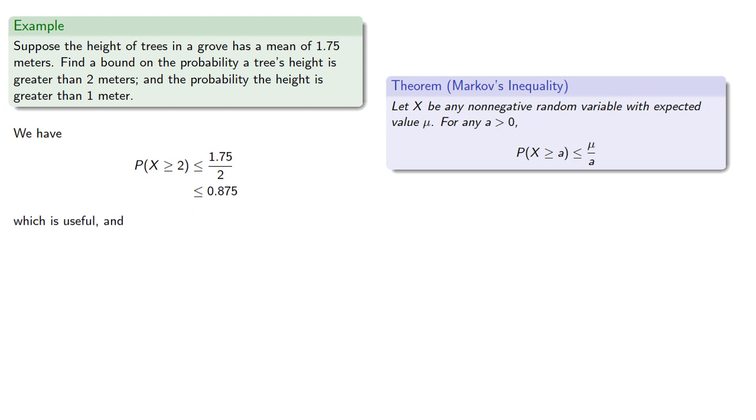Now the thing to remember is you get what you pay for. Markov's doesn't cost very much—we only need to know the mean. So if you want to find the probability that X is greater than or equal to 1, then we know that's less than or equal to the mean divided by 1, which is to say less than or equal to 1.75.